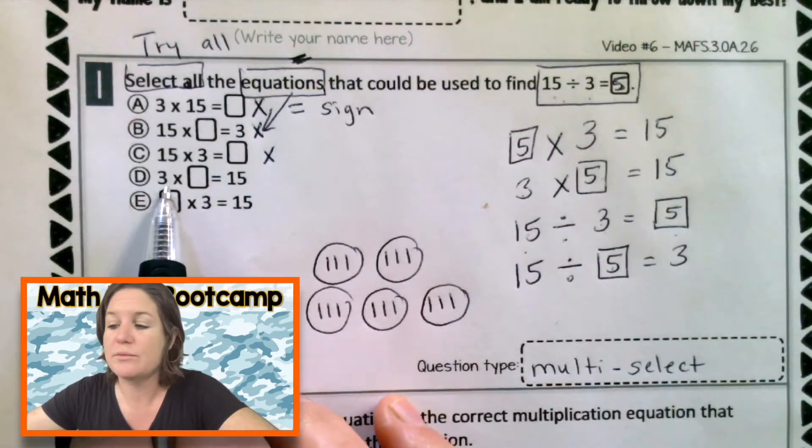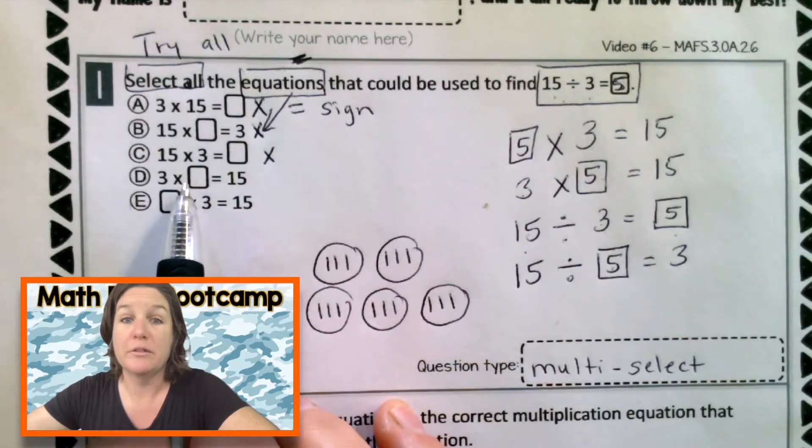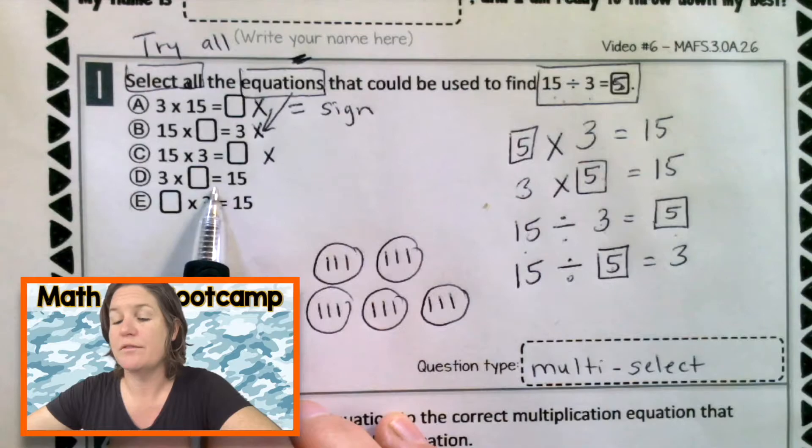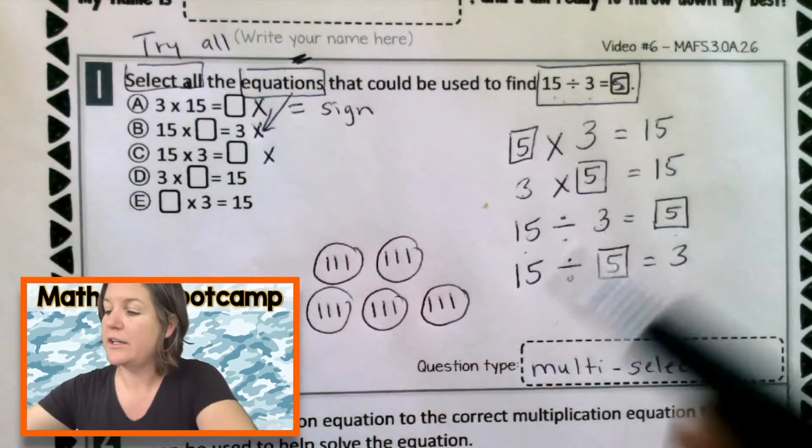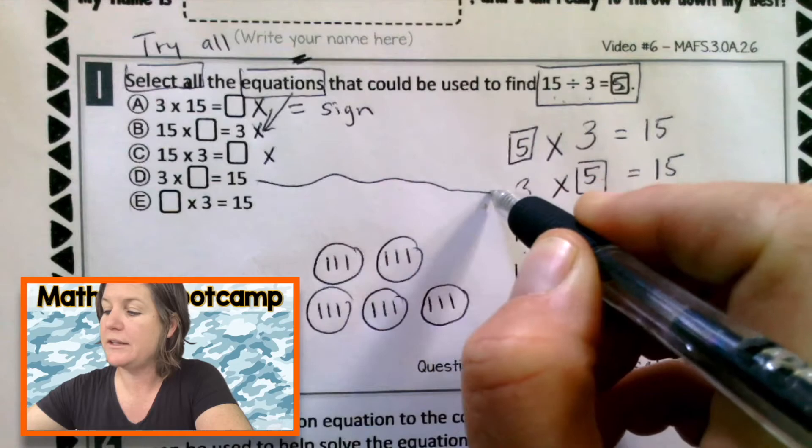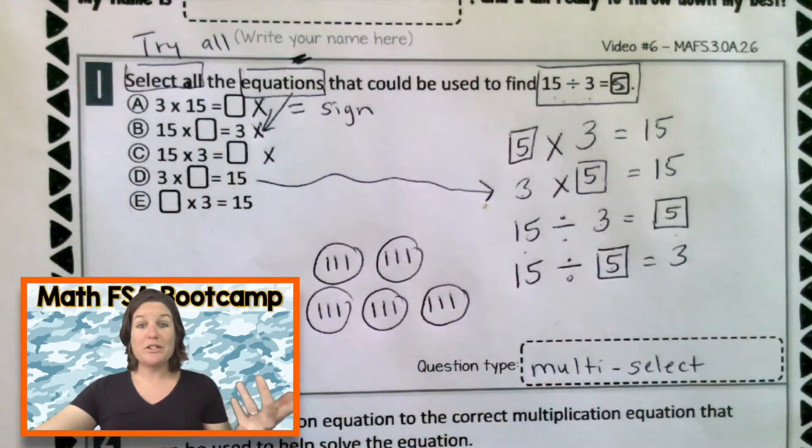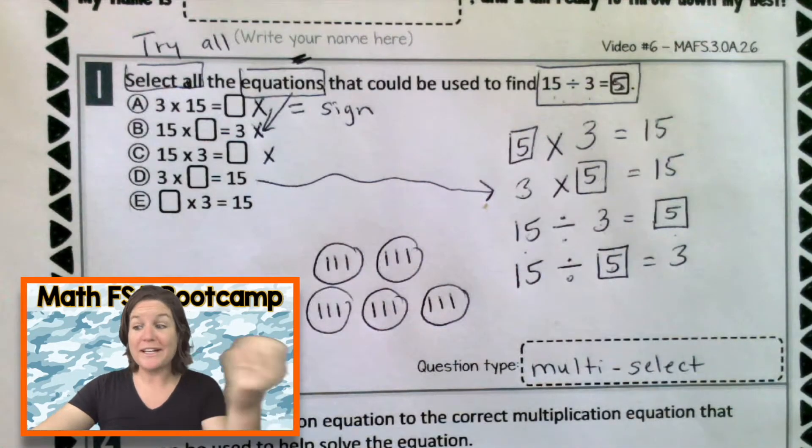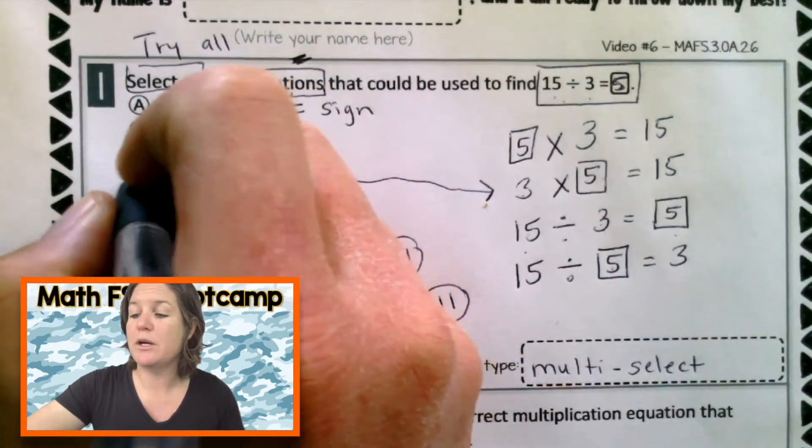Choice D says 3 groups of 5 equals 15. Well, look, that matches up with our work right there. So what can we do with choice D? We're going to keep that one. Let's go ahead and mark that.